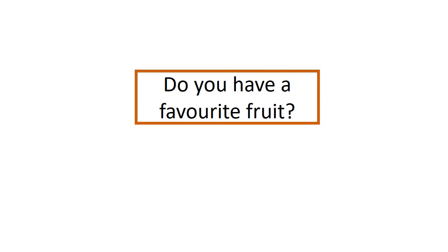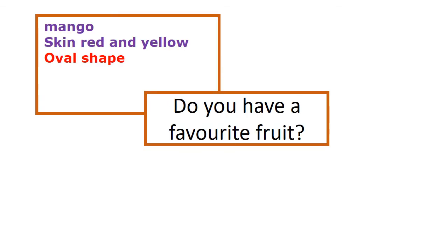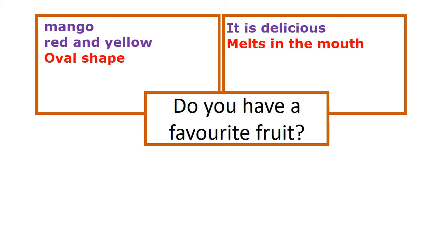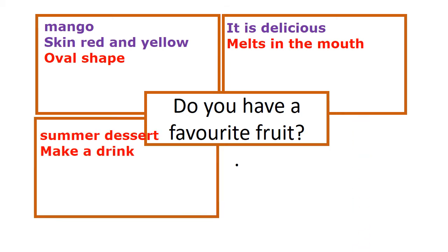Let's look at our second square. My favorite fruit is the mango. I say that it has skin that is red and yellow and it has an oval shape. I am also going to write that it is delicious and it melts in your mouth. I am also going to brainstorm some other ideas — it is a summer dessert and you can make a drink with it.